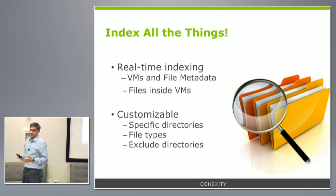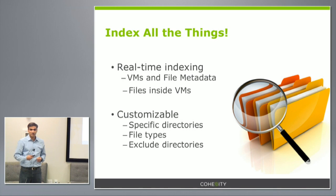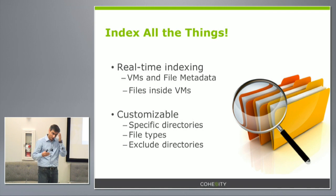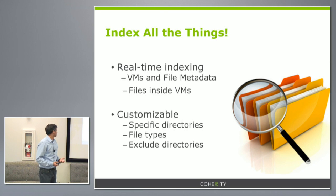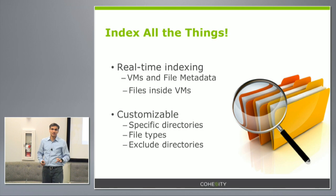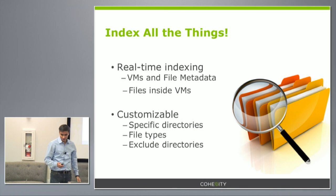As the data is being backed up on Cohesity, the indexing engine is building an index in parallel. We crack open VMDKs, discover what files are inside VMs, index those, and make them available for search and restore. The indexing is also customizable — you can specify at each VM level which files you want to index, which makes it more efficient.